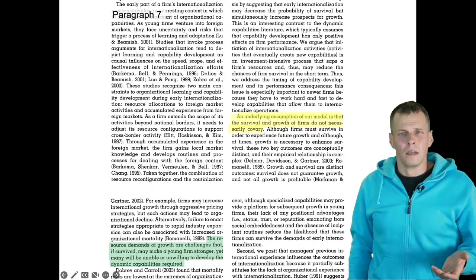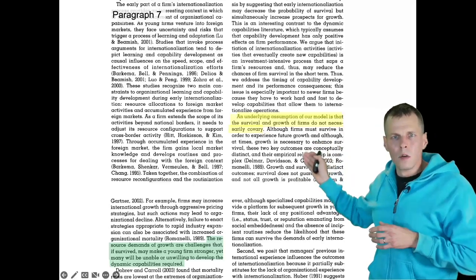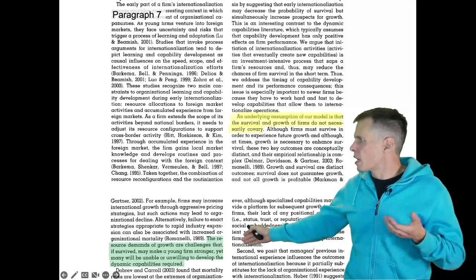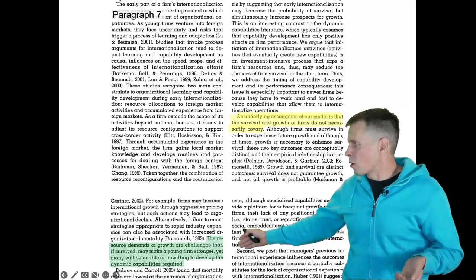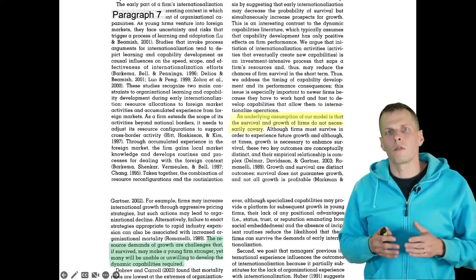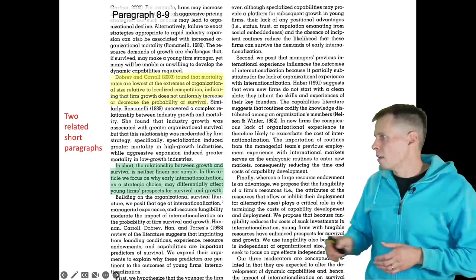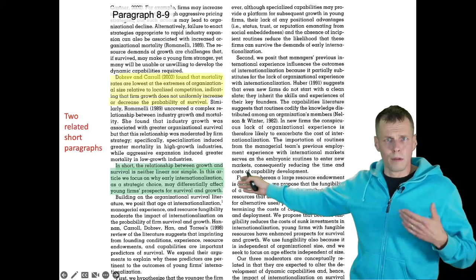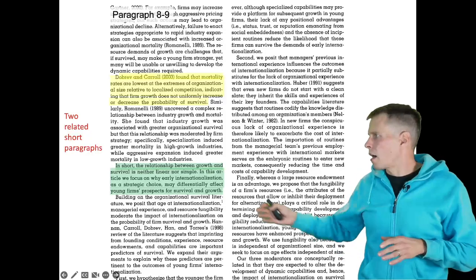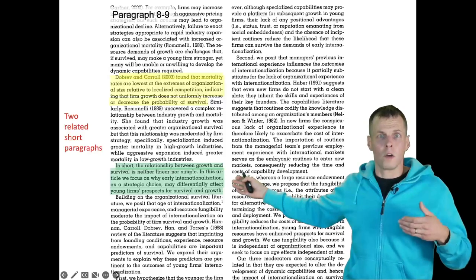Paragraph 7 talks about the relationship between growth and survival — that's the topic sentence. We look at the conclusion: the demands of growth are challenges that if survived may make a firm stronger, yet many will be unable or unwilling to develop the dynamic capabilities required. So trying to expand internationally early on helps you grow but also increases the risk of failure — that's the main point. Paragraphs 8 and 9 are basically supporting paragraphs of paragraph 7, just saying that the relationship between growth and survival is complex and not studied much in this context. Since paragraph 9 is a single sentence, read both 8 and 9 together within the context of paragraph 7.